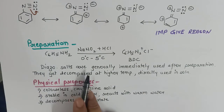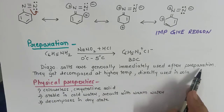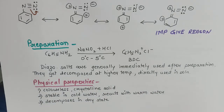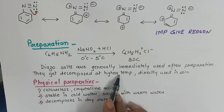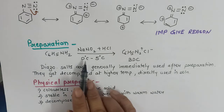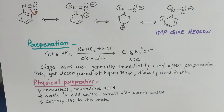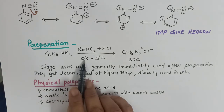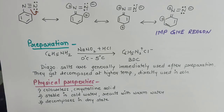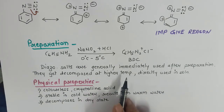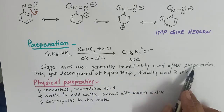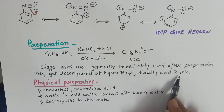A speciality of diazonium salts is they are immediately used after preparation — we cannot store them because they decompose at higher temperatures. They are stable only between 0°C and 5°C. Therefore, in the laboratory, care is taken to maintain this temperature, and they are directly used in solution.